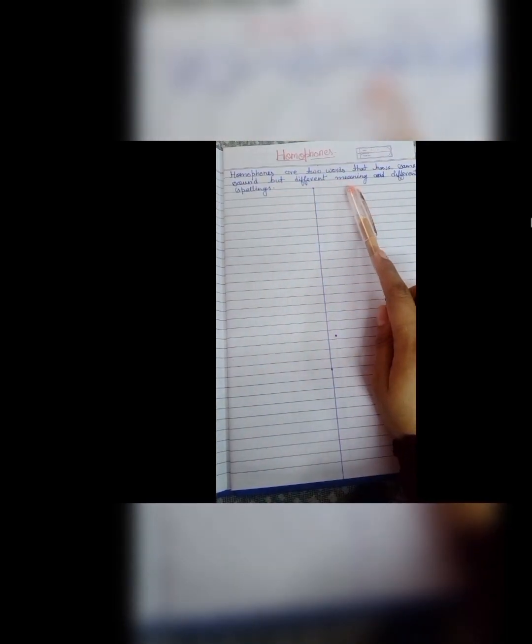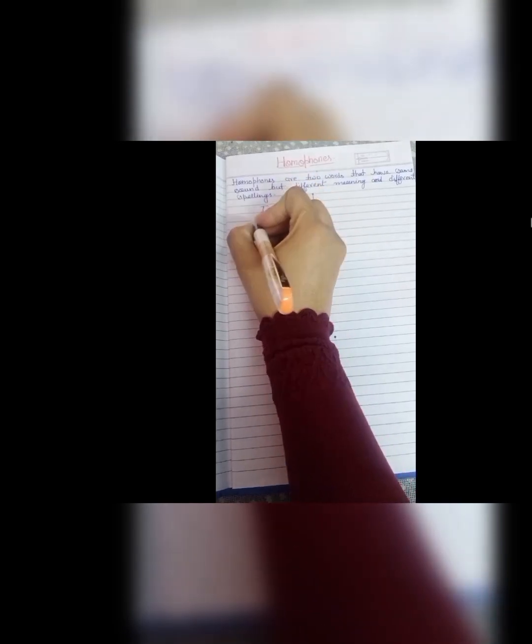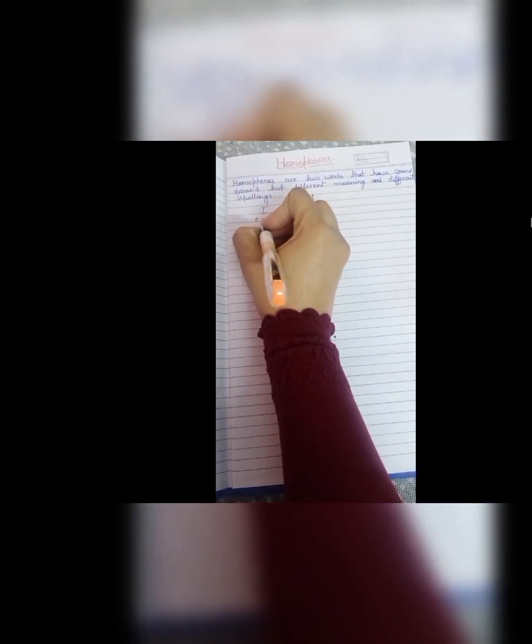Hello everyone! English may kuch word bade confusing hote hai. Jaisi agar sun means suraj hai, toh bete ko hum kya kahenge? Aise words ko bolte hai homophones. Homophones are two words that have the same sound but different meaning and different spelling. Means they have same pronunciation but different spelling. That's why unke meaning different ho jate hai but pronounce hum unko same hi karenge.